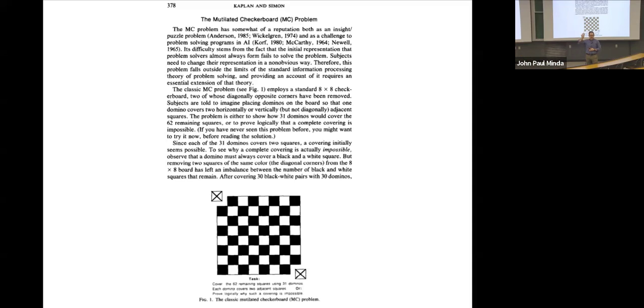Subjects are told to imagine placing dominoes on the board — each domino covers two squares horizontally or vertically, not diagonally. The problem is to show how 31 dominoes would cover the remaining 62 squares, which mathematically seems possible since 31 times 2 is 62, or to prove logically that a complete covering is impossible. To see why it's actually impossible: observe that a domino must always cover one white and one black square. If you've removed two diagonally opposite corners — both the same color — you now have an unequal number of black and white squares, so a complete covering is impossible.